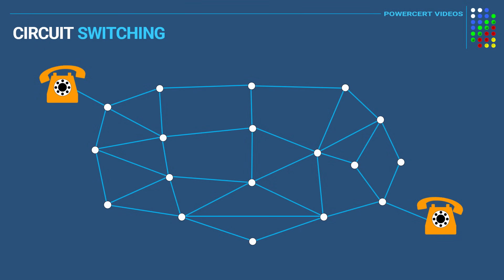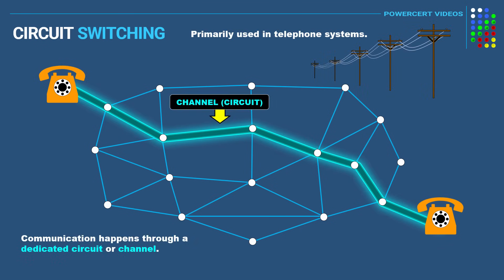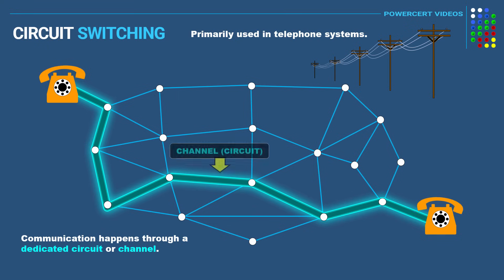So let's first talk about circuit switching. Circuit switching is a method where the communication happens through a dedicated circuit or channel that is created between two devices. Circuit switching is connection oriented,